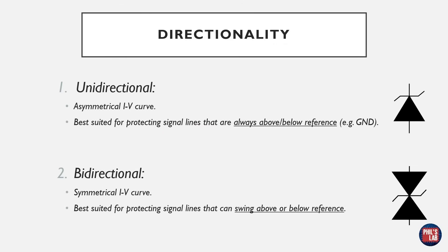There are two types of TVS diode directionality. A unidirectional diode has an asymmetrical IV curve and is best suited for protecting signal lines that are always above or below the reference — one side is usually connected to ground and the other to the signal line, for either positive or negative valued signals with respect to ground. A bi-directional TVS diode has a symmetrical IV curve and is best suited for protecting signal lines that can swing both above and below the reference, again with one side connected to ground and the other to the signal line.